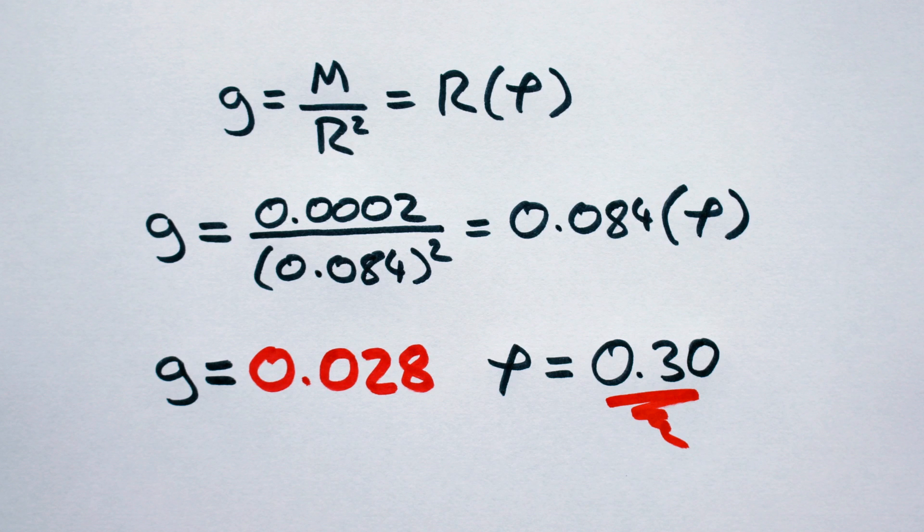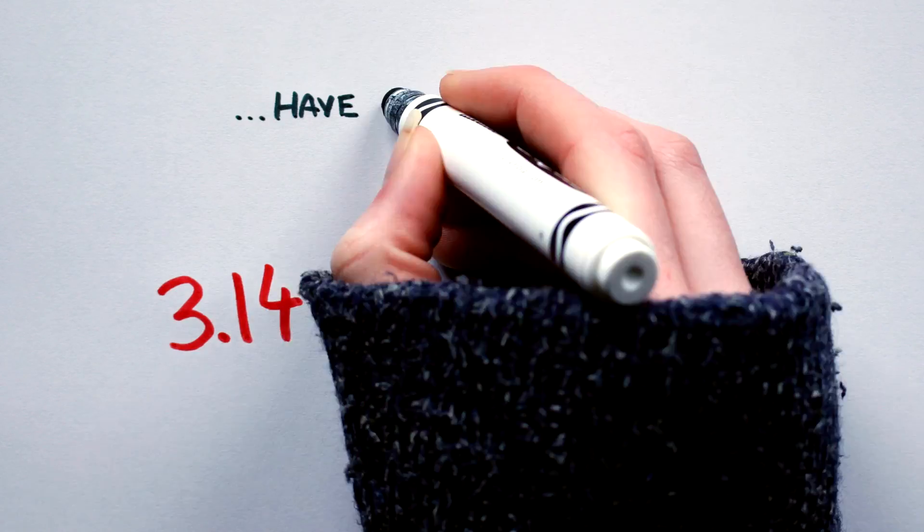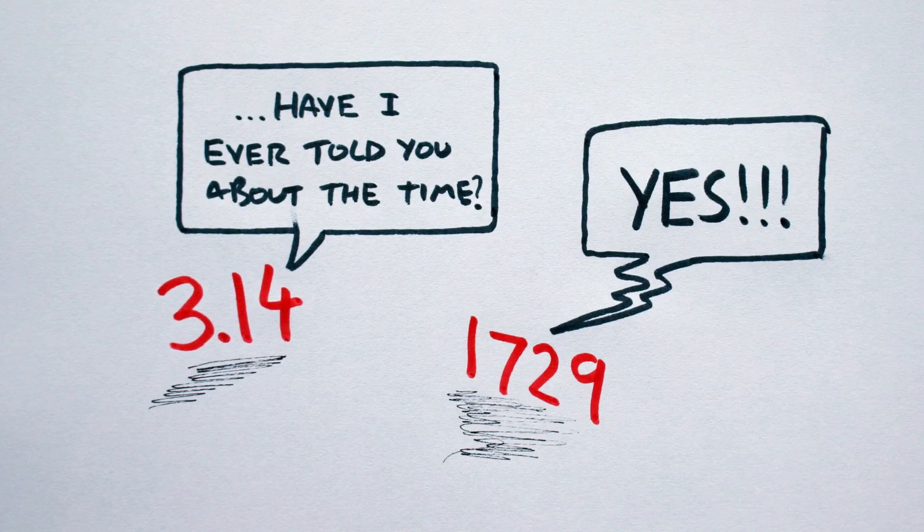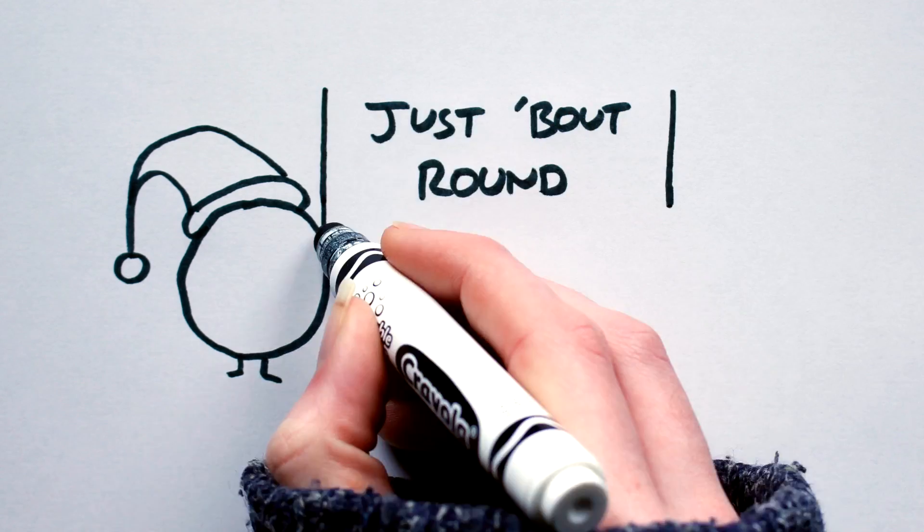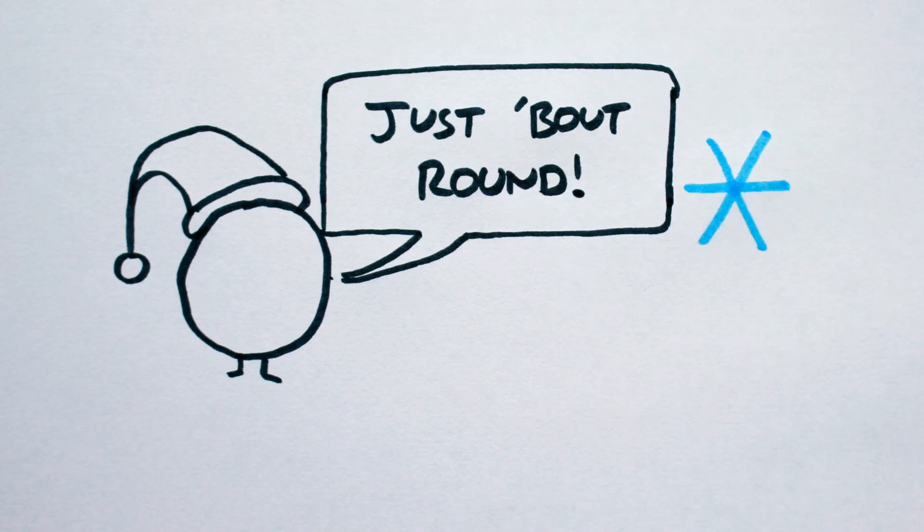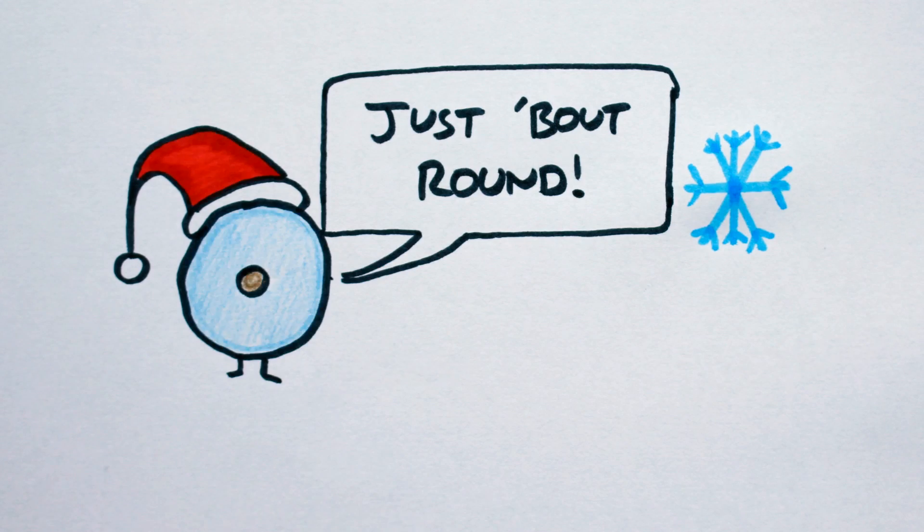But what does it all mean? They're just figures, right? Well, not really. The figures help tell the story of our dwarf planet. Peter's low mass indicates he is barely massive enough to be in hydrostatic equilibrium, and his low density indicates that he's primarily composed of ices.